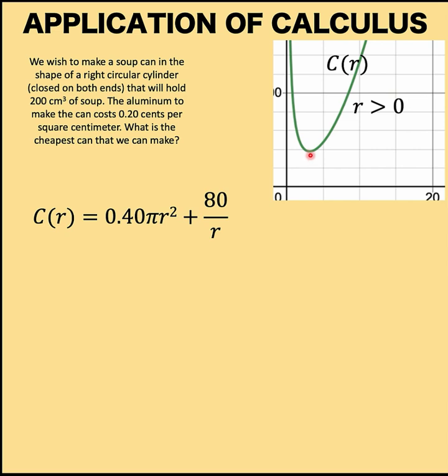Therefore, we are after this lowest point here. At this lowest point of the graph, the slope of the line that is tangent to this point must be 0 because the line must be horizontal.